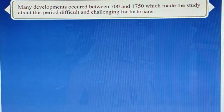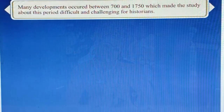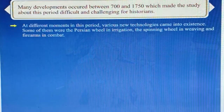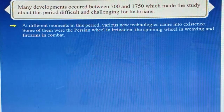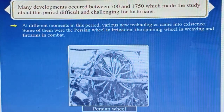Many developments occurred between 700 and 1750, which made the study of this period difficult and challenging for historians. At different moments in this period, various new technologies came into existence. Some of them were the Persian wheel in irrigation, the spinning wheel in weaving, and firearms in combat.